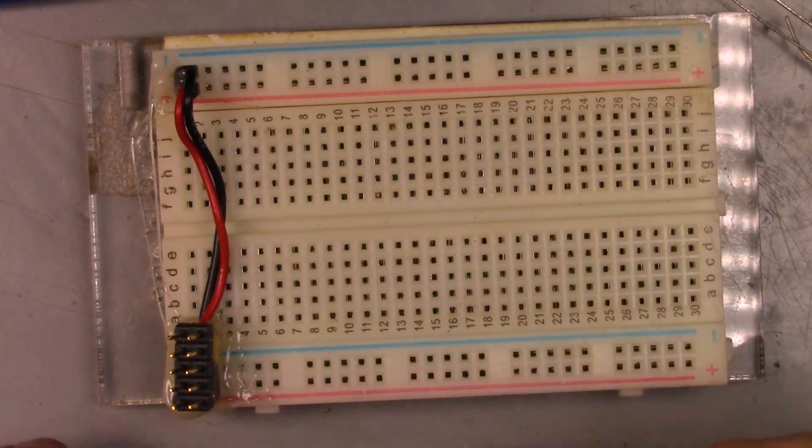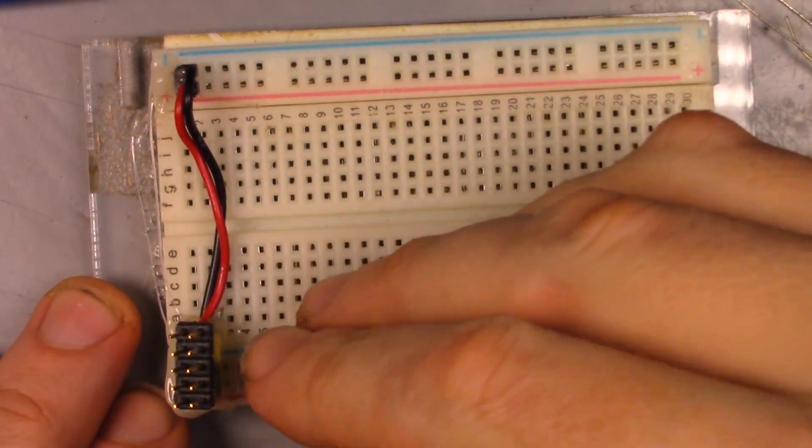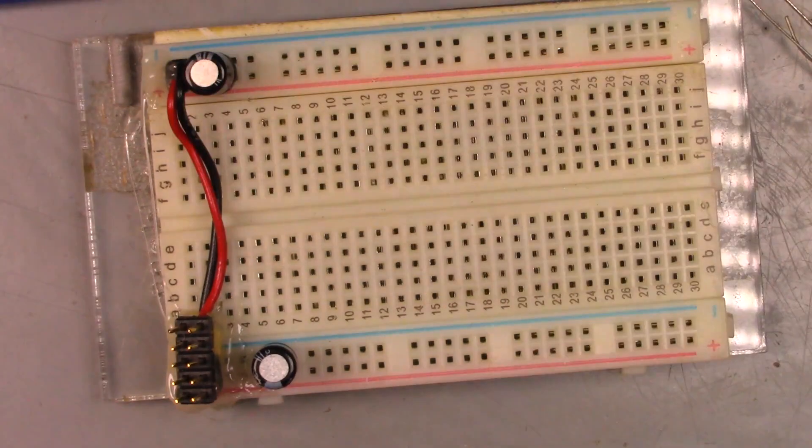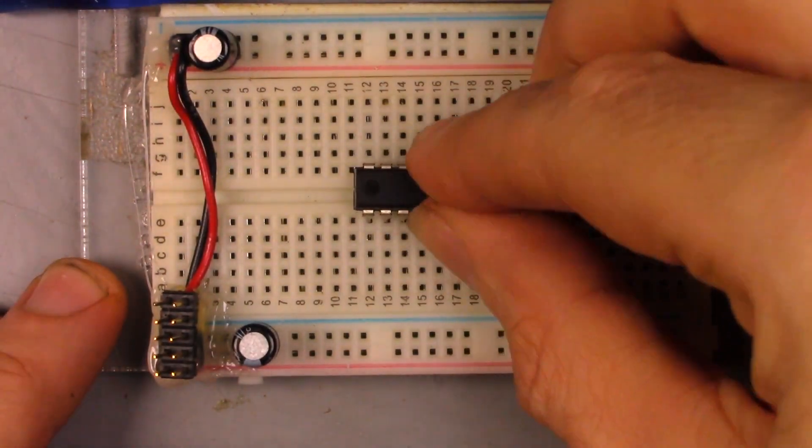Now for the breadboarding. Let's start with some power filter caps, 10uF. Next, the LM324 op-amp chip.